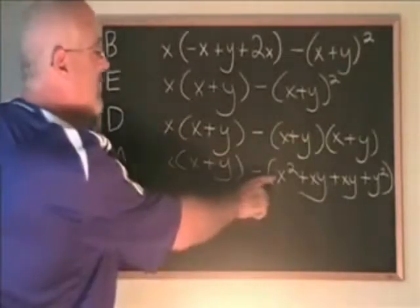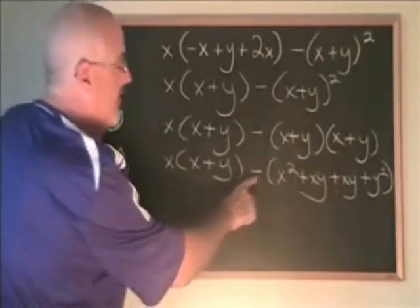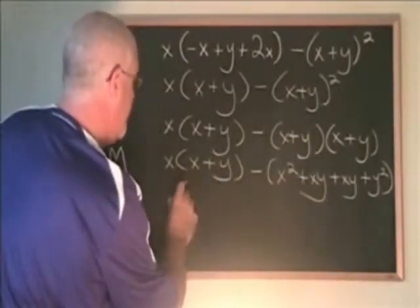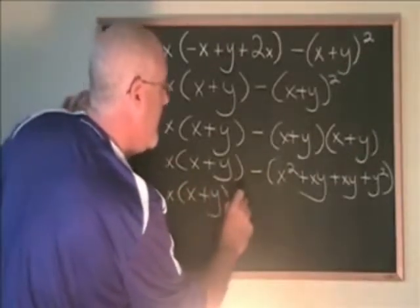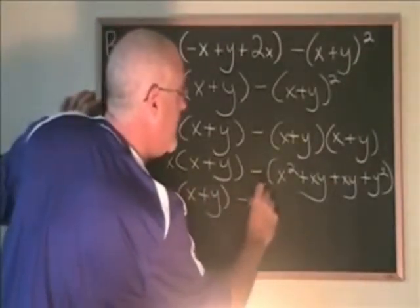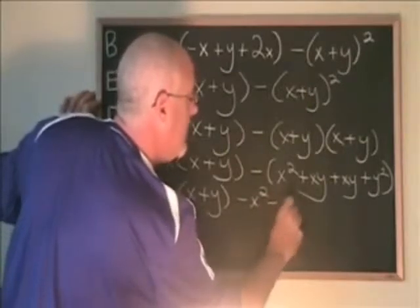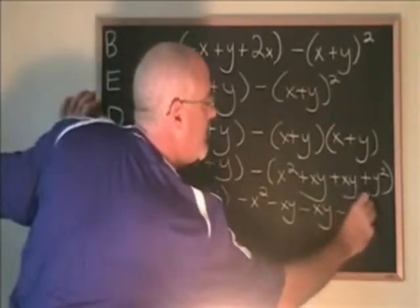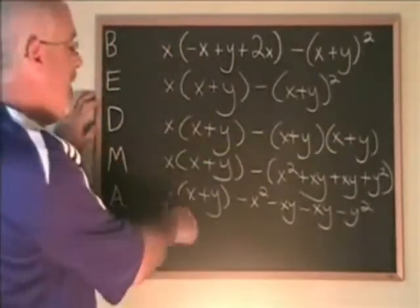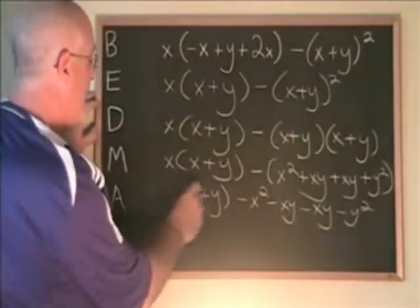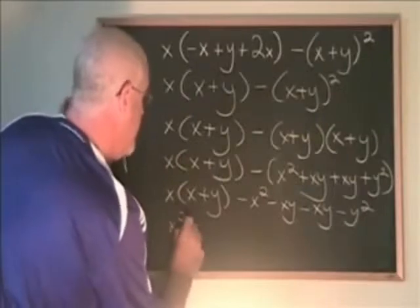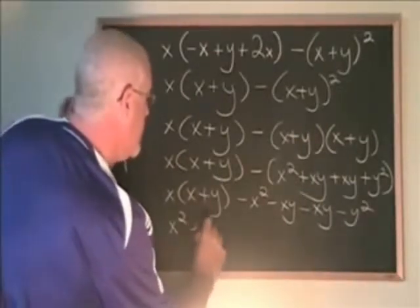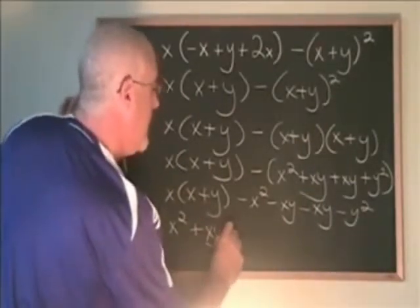Now, I just have to remove the bracket and fix the signs. We have minus x squared minus xy minus xy minus y squared. Now, I'm doing this multiplication. x times x is x squared. x times y is xy. I copied on the rest.